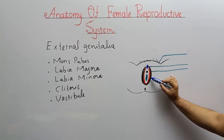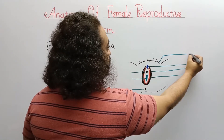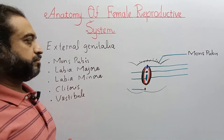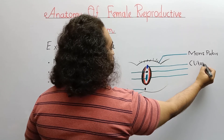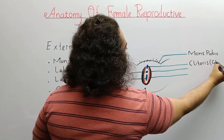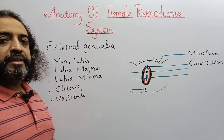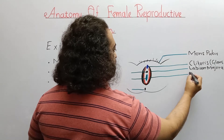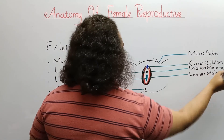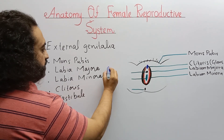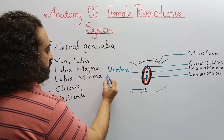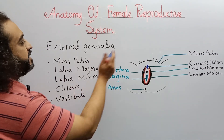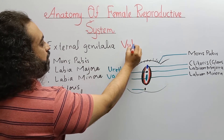If we label it: this is mons pubis, the upper skin fold over the pubic symphysis; this is the clitoris, the highly sensitive area, also referred to as glans clitoris — it is analogous to the human male glans penis. This is labium majora and labium minora (singular: labium). Here is the urethral opening, and here is the vaginal opening. This entire external genitalia is called the vulva.